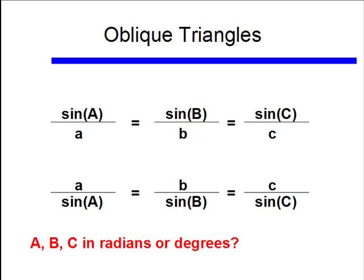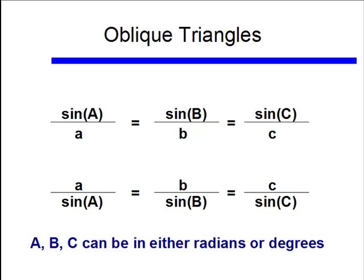But the sine of that angle, whether it's in radian or degrees, as long as your calculator is in the right mode, will give you the same answer for the sine function. So A, B, and C can be given in either radians or degrees.